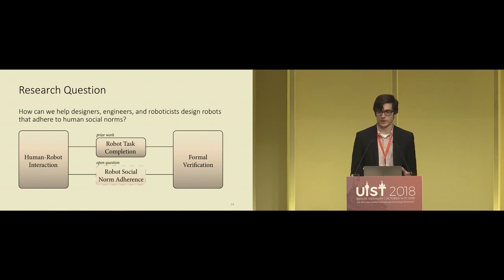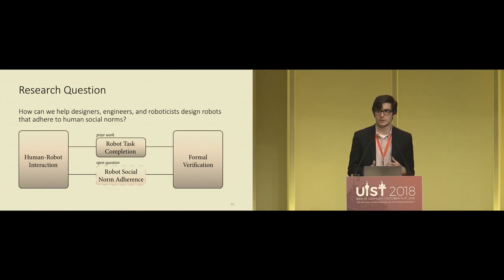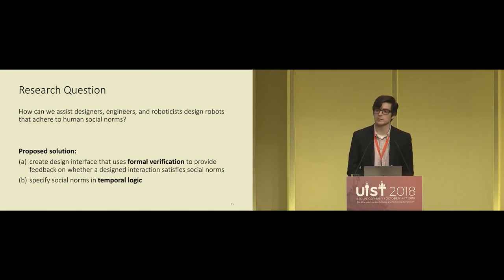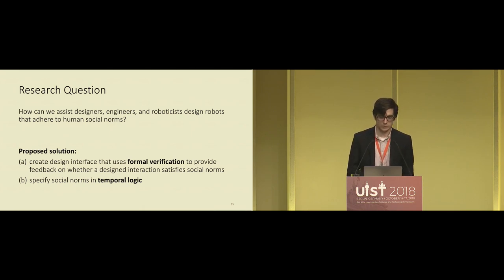Our work is at the intersection of human-robot interaction and a programming languages theory area called formal verification. Prior work has integrated HRI and formal verification to check that the robot succeeds in its task. What we aim to do is bridge the gap by checking that the robot adheres to relevant social norms within the interaction context. Our proposed solution is to create a design interface that uses formal verification to provide feedback on whether an interaction design satisfies social norms, with norms specified in a representation called temporal logic.